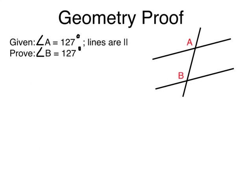Let's try a geometry proof. Right here we're given that angle A is 127 degrees and the lines are parallel. Our goal is to prove that angle B is 127 degrees.